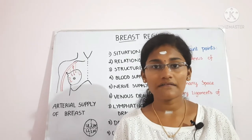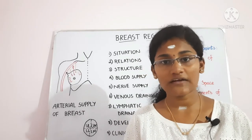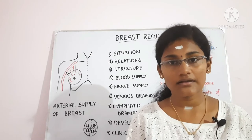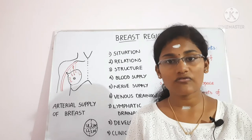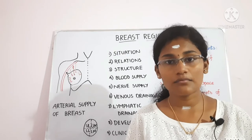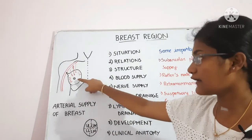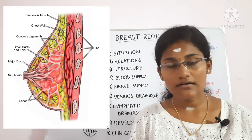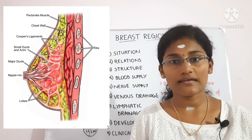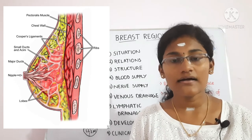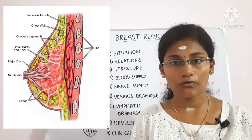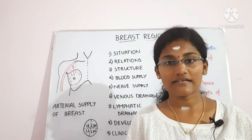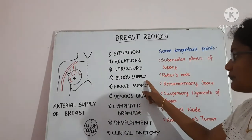The stroma forms the supporting framework of the mammary gland and is partly fibrous and partly fatty. The fatty component forms the bulk of the gland and is distributed everywhere except the nipple and areola. The fibrous part forms septa known as the suspensory ligaments of Cooper, which attach the skin and gland to the pectoral fascia.